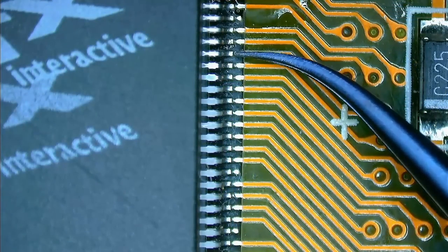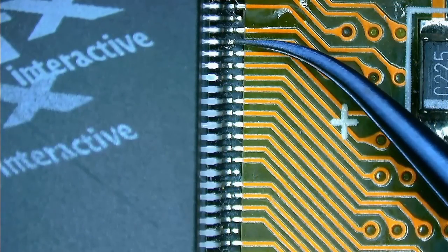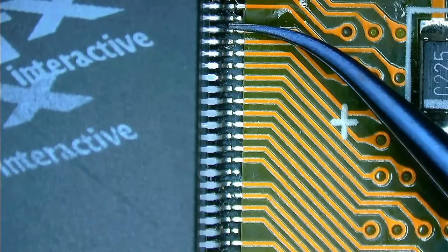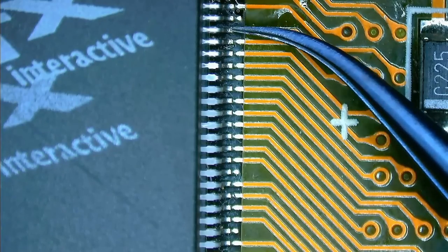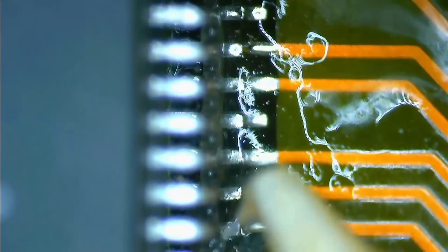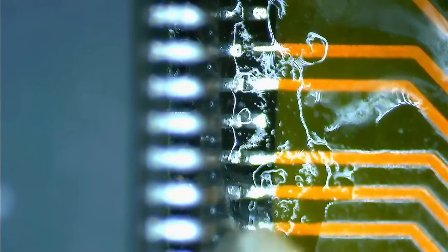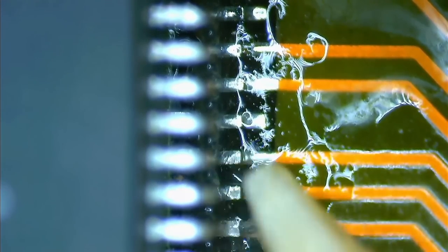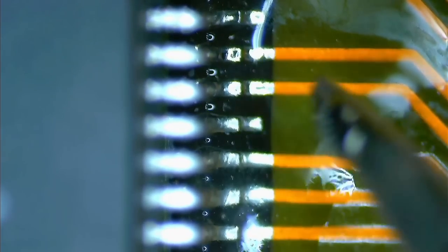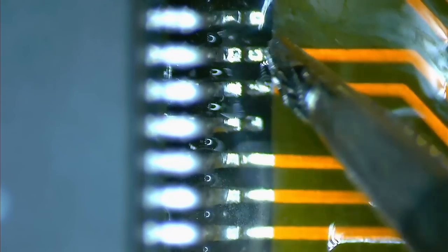I also checked the solder joints of the other pins on this side of the chip. And as you can see, some pins close to the corner where the pins are missing have a loose connection. All those pins need to be reattached. Even if they do not seem to be completely disconnected, it will only be a matter of time until they lift off the pad. So let me do proper work here and fix all pins in that area.